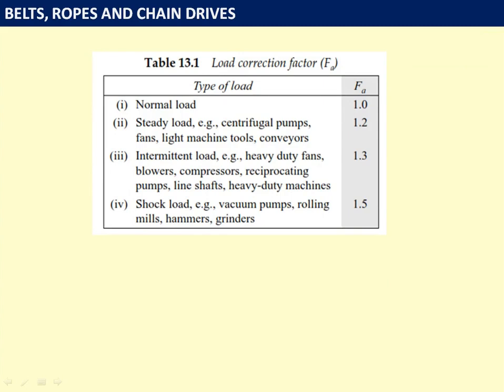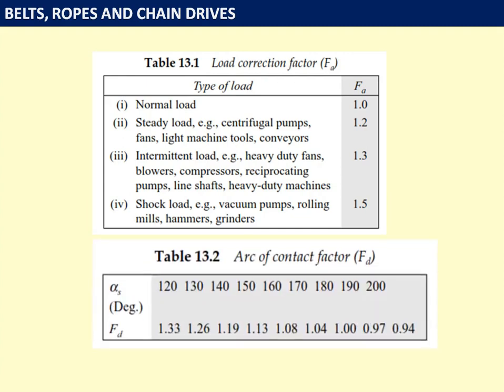For normal load, FA = 1. For steady loads like centrifugal pumps, fans, light machine tools, and conveyors, FA = 1.2. For intermittent loads like heavy duty fans, blowers, compressors, reciprocating pumps, line shafts, and heavy duty machines, FA = 1.3. For shock loads such as vacuum pumps, rolling mills, hammers, and binders, FA = 1.5. For the arc of contact factor Ft on the smaller pulley: at alpha = 120°, Ft = 1.33; at 130°, Ft = 1.26; at 200°, Ft = 0.94. As the lap angle increases, the correction factor decreases.